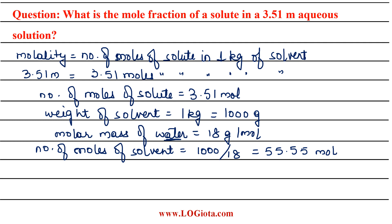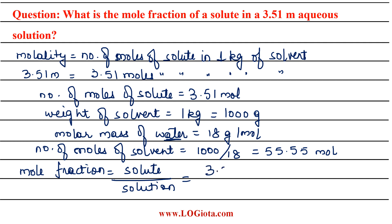Now we know the moles of solvent and the moles of solute, so we can calculate the mole fraction. The mole fraction of solute is equal to moles of solute divided by moles of solution, which is solute plus solvent. So this comes out to be 3.51 divided by (3.51 plus 55.55). When we calculate it, we get the answer as 0.059.